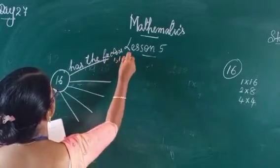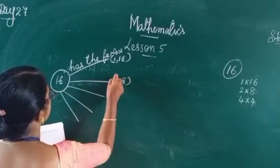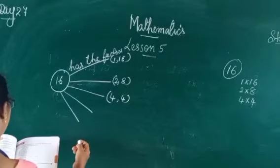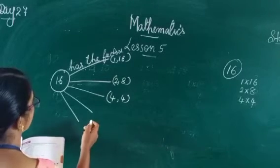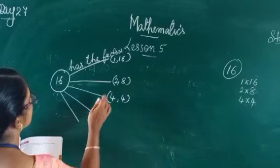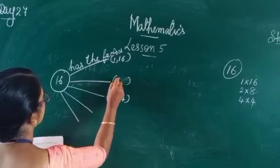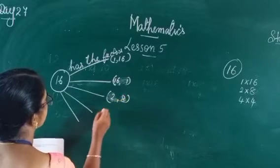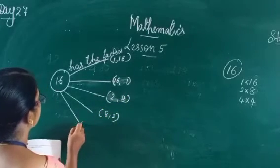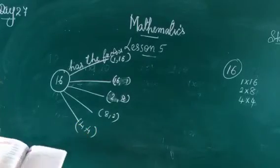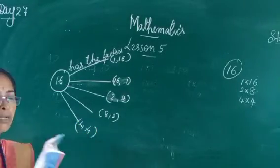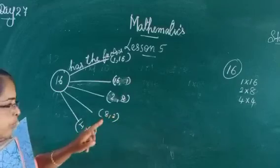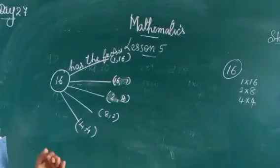The multiplication story of 16: 1 × 16, then 2 × 8, then 8 × 2, then 4 × 4. So the factors of 16 are 1, 2, 4, 8, and 16. The multiplication story is: 1 × 16, 16 × 1, 2 × 8, 8 × 2, and 4 × 4.